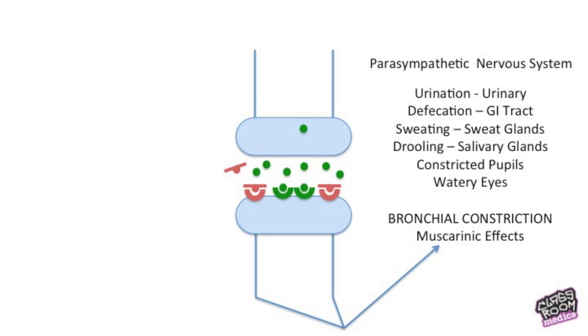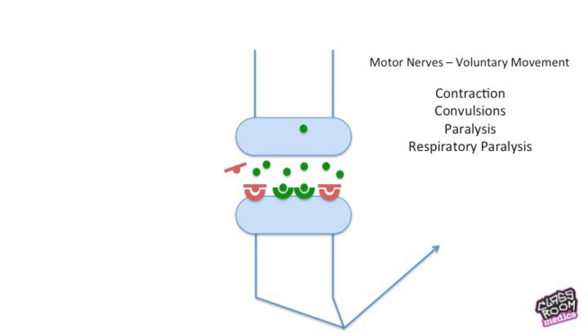These are called the muscarinic effects because the acetylcholine is affecting the muscarinic receptors. Now acetylcholine also affects what we call your motor nerves and these nerves control your voluntary movement. So you want to pick up a pen and write, you're using your motor nerves. Acetylcholine will actually cause contraction of muscles. So if we're overstimulating these nerves, we get lots of contractions, we get convulsions. But what we get is a rigid paralysis. So your muscles are being stimulated so much they go into a rigid contraction so you can't physically move.